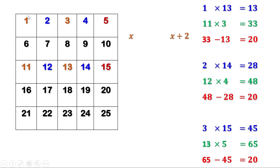When the first number is 1, the third number is 11. When the first number is 2, the third number is 12. When the first number is 3, the third number is 13. That is, the third number is 10 more than the first number. Therefore, if x is the first number, the third number is x plus 10.